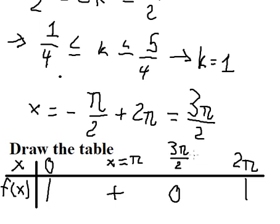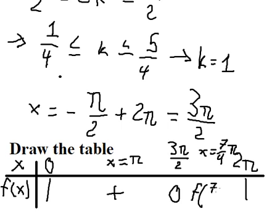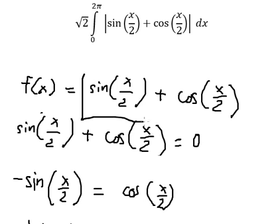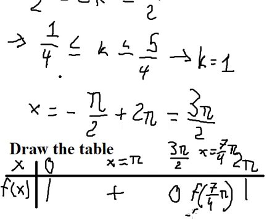Now let's put a number between 3π over 2 and 2π. I will select S equals to 7 over 4 times π. So I will put F equals to 7π over 4 into this function. We get negative 0.5, and negative 0.5 is smaller than 0, so this interval should be negative.